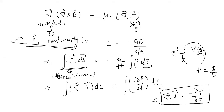It is not universally true that del dot J equals zero. If you are piling up charges somewhere or continuously withdrawing charges from a volume, then del dot J equals minus partial rho by partial t, where J is your current density and rho is your charge density.